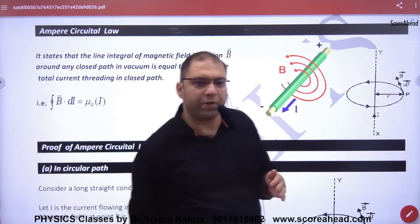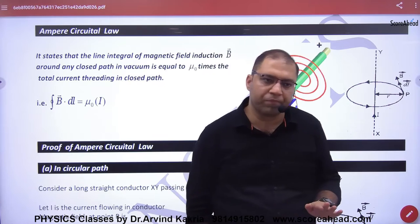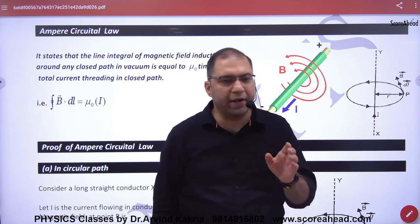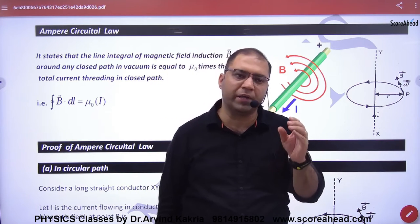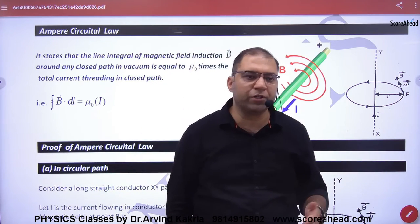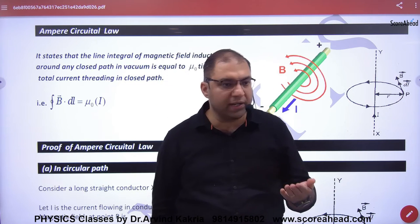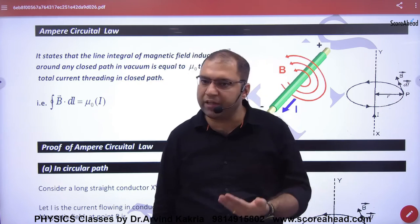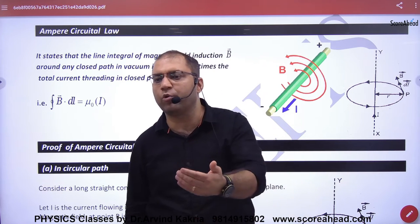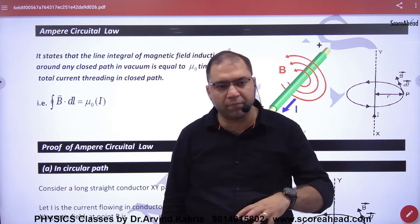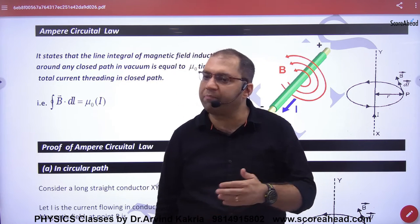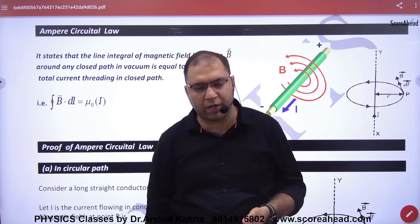The next topic is Ampere's Circuital Law. Before this, we used Biot-Savart's Law to find the magnetic field. That approach started with a small element dL to find the small magnetic field dB. We then applied results for a straight wire or arc. But for some figures, using Biot-Savart's Law gives very complex or very long calculations.